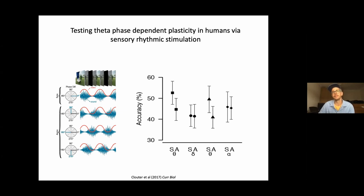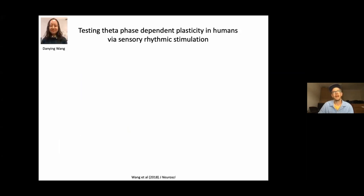Then we asked the question whether this effect is specific for theta or whether we observe this effect also at other frequencies. And we saw an advantage for memory for the synchronous compared to the asynchronous condition in theta. But we did not see this effect for a slower frequency like delta or for a faster frequency like alpha. So to this end, this effect seemed to be frequency specific and only occurring at the theta frequency at about four hertz for humans.